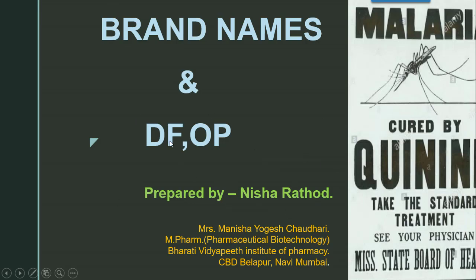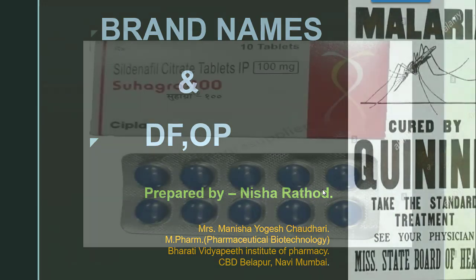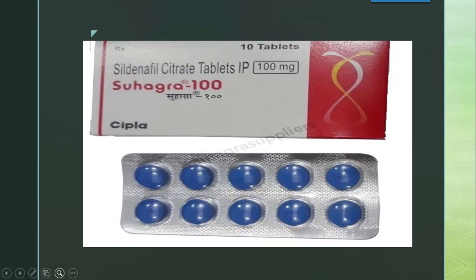This presentation on brand names of chloroquine and dosage forms is prepared by second-year student Nishara Thod. As you can see here, 'Suhagra 100' is the brand name given to Sildenafil citrate tablet IP 100mg. Since IP is there, this is an official preparation in the Indian Pharmacopoeia, and the brand under which Cipla is manufacturing it is Suhagra 100.